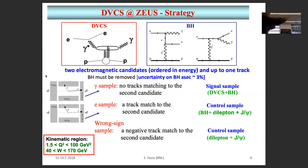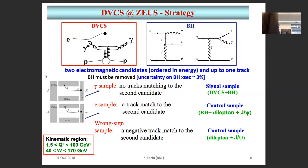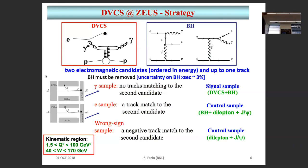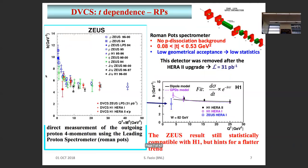This technique is now considered in our studies for the EIC. HERA's measurements were in Q-squared basically between 1.5 and 100 GeV-squared, and W between 40 and 170 GeV.